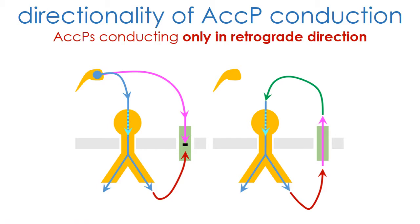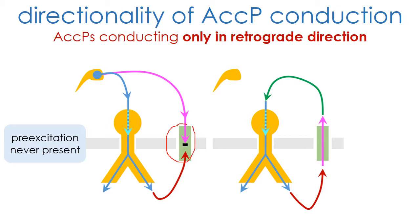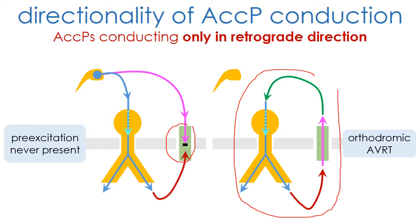Patients with concealed accessory pathways capable only of retrograde conduction do not exhibit pre-excitation during sinus rhythm because of the inability of the anomalous bundle to conduct in the anterograde direction. These patients, however, present frequently the orthodromic form of atrioventricular reciprocating tachycardia, using the accessory pathway as the retrograde arm of the circuit and the normal AV node, His pathway as the anterograde limb of the re-entry mechanism.